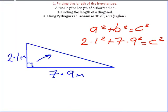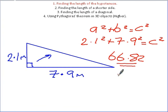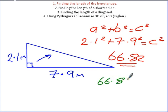66.82. A really classic mistake in the exam is to write down this answer and move on. Because it doesn't make sense that this length is going to be 66.82 metres when this length here is 7.9. So we've got 66.82 equals C squared. We know that multiplication and division are inverse operations, and addition and subtraction are inverse operations. We've got a length squared, and the inverse of squaring is square rooting.